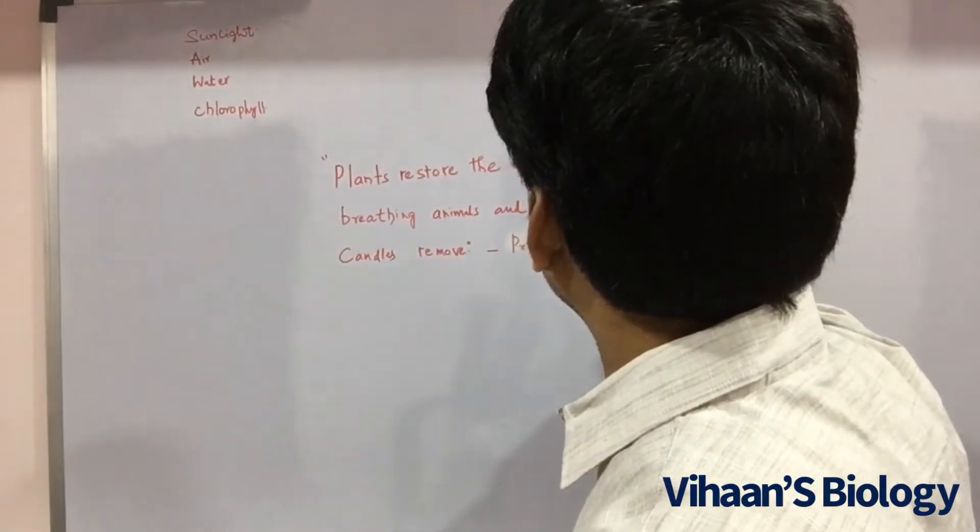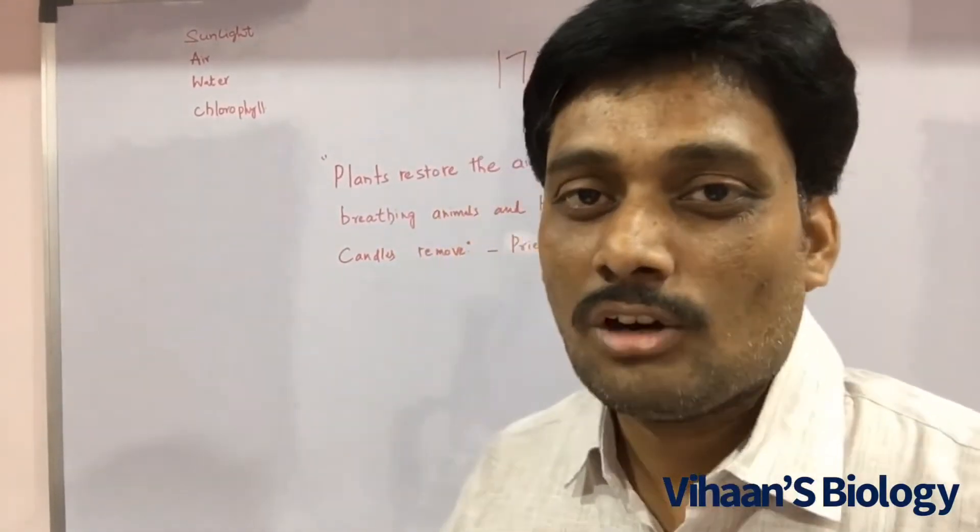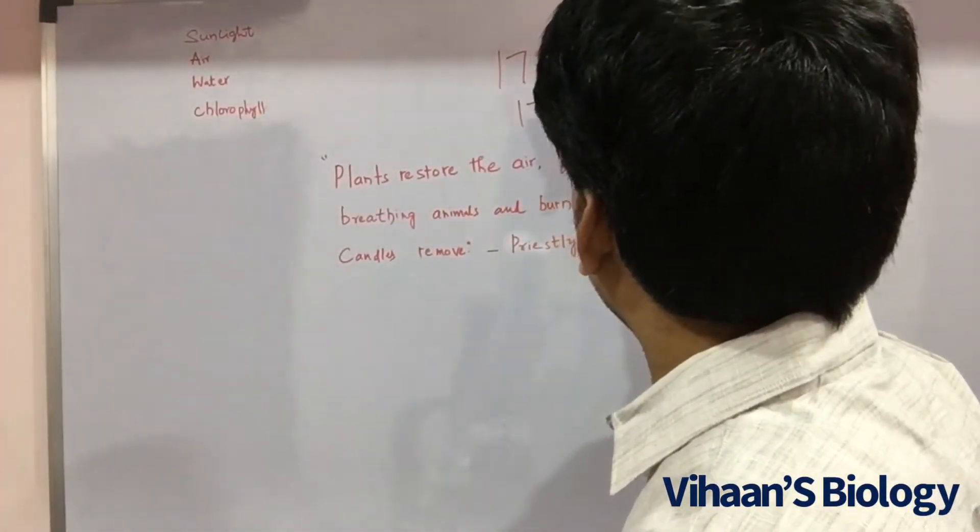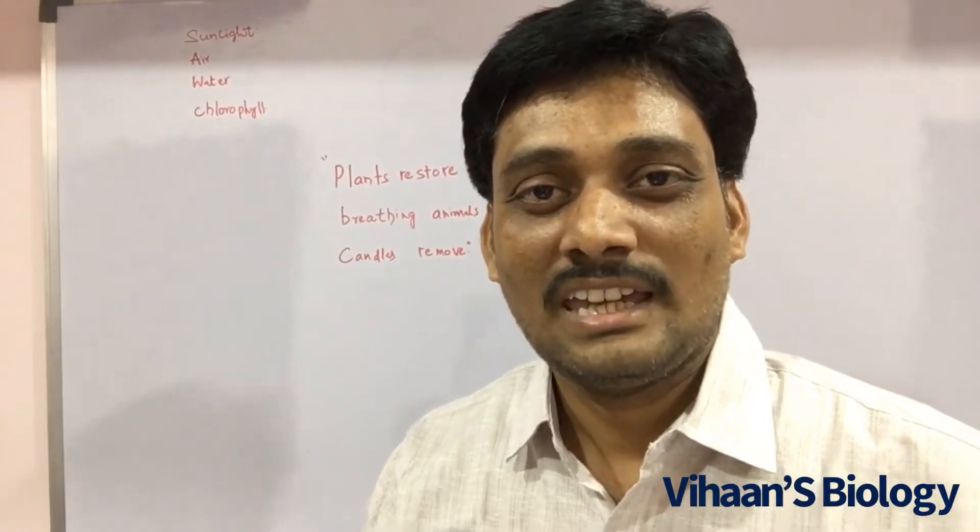We already know scientist Joseph Priestley from our previous classes. He introduced one gas but he did not know the name of that gas, which is oxygen. In the year 1774, Joseph Priestley discovered this gas, but he did not know its name. Then in the year 1775, Lavoisier gave that gas the name oxygen.